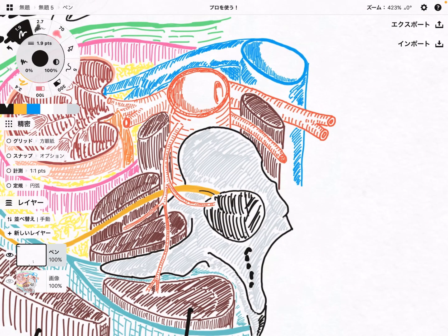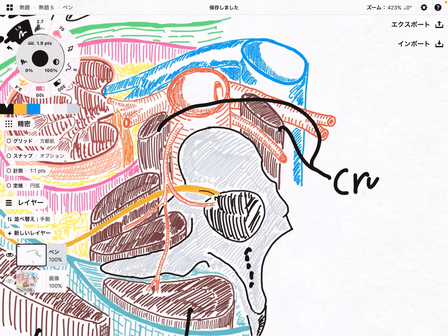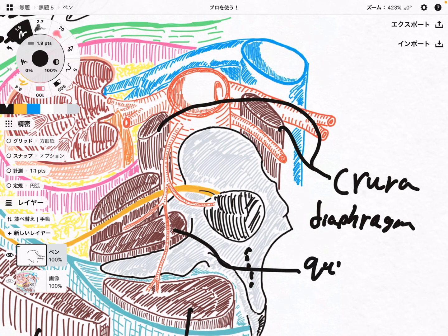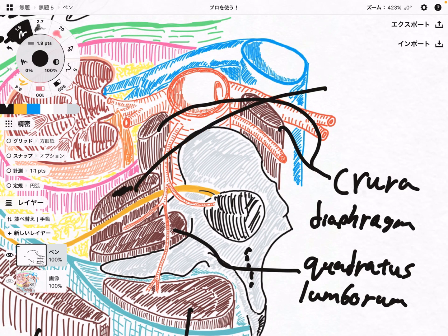Now let's go to the deep core muscles. See these tiny muscles — these are part of the diaphragm, specifically the crura of the diaphragm. This one is the quadratus lumborum. And this very famous core muscle here is the psoas muscle.